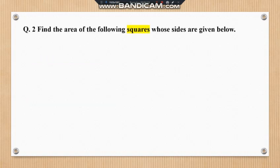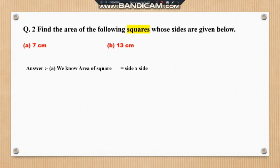Question number two: find the area of the following squares. Side values are given — find the area. Question A: side is 7 cm. Using the formula, area of square = side multiplied by side. Substituting, 7 cm × 7 cm. 7 sevens are 49. Therefore, the area of the square is 49 square centimetres.